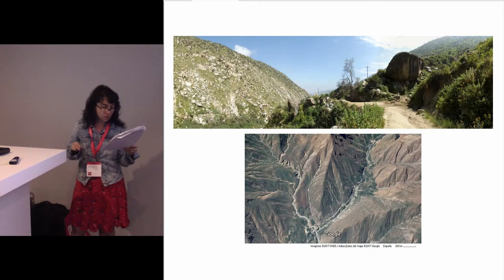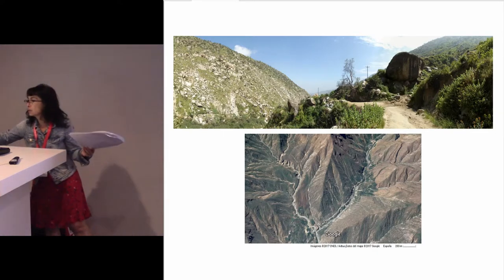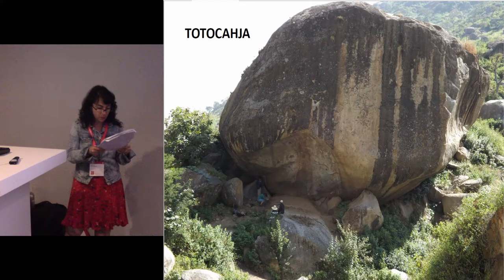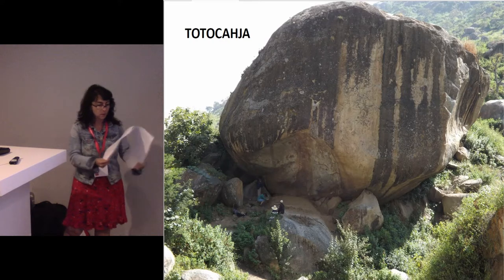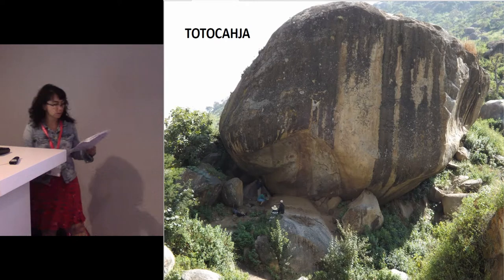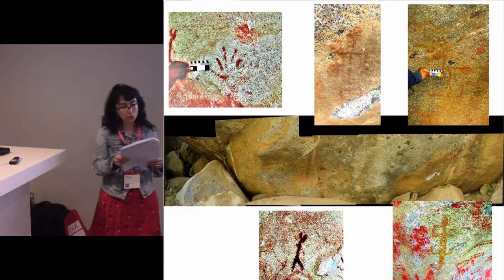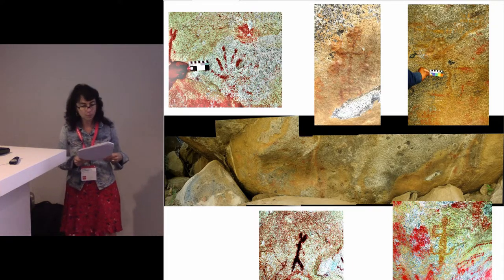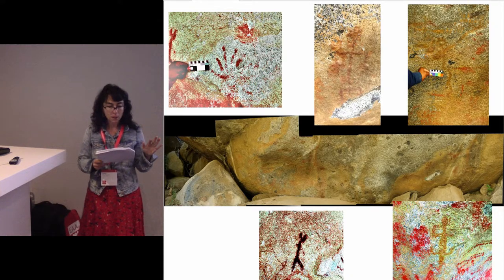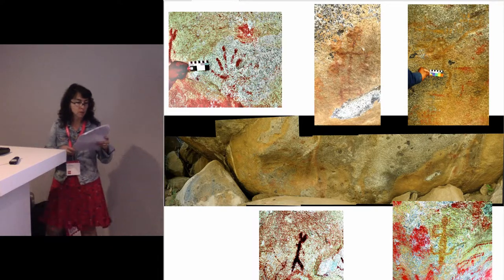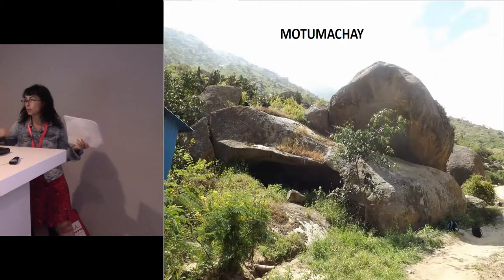The paintings in both cases are outdoors in visible places that look onto the path. The first is the Totokaha site. This large rock appears painted only on one side. The panel has a total length of seven meters. The designs are figurative and non-figurative, and many of them are superimposed. The colors used are reds and yellows in a white range.